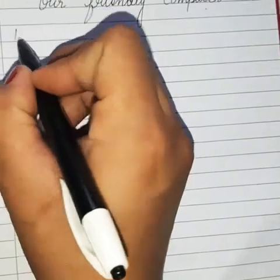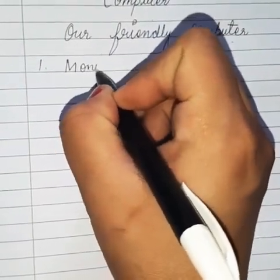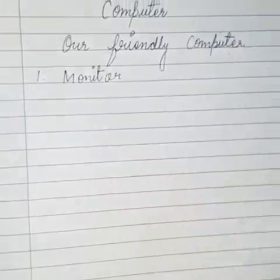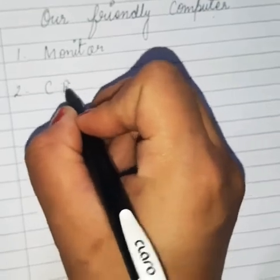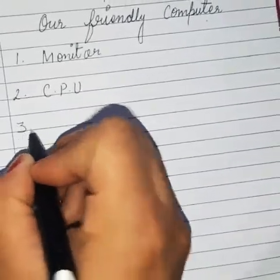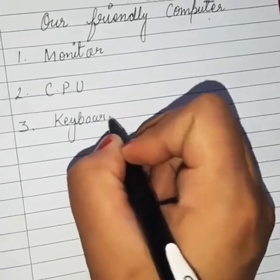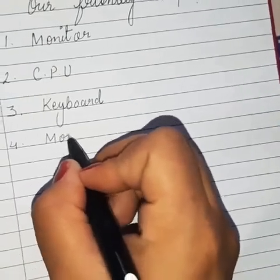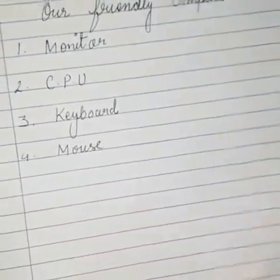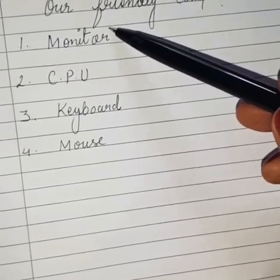Mainly we have four parts in a computer: the first one is monitor, the second one is CPU, the third one is keyboard, and the last one is mouse. Later, when you go to higher classes, you will learn about some more parts of computer that are useful to us.